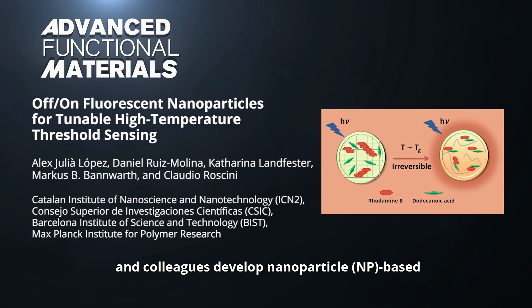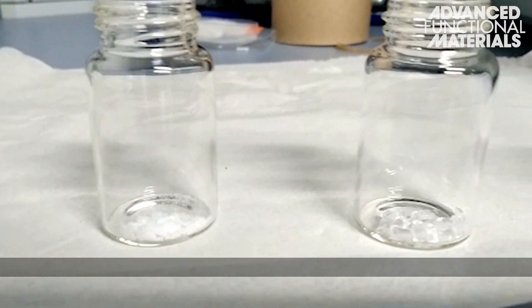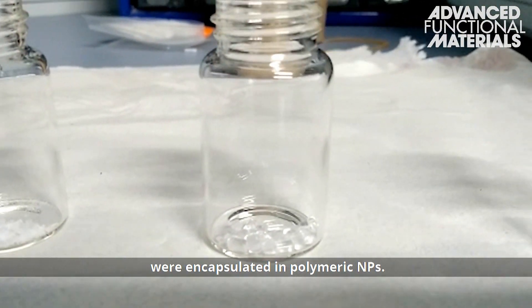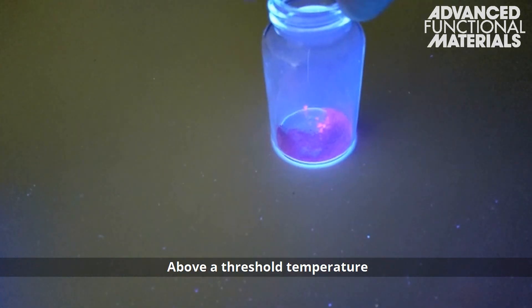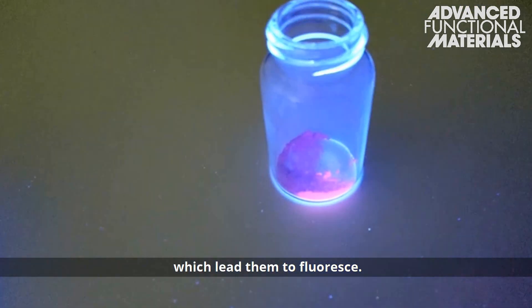develop nanoparticle-based fluorescent temperature sensors. Rhodamine B dye and dodecanoic acid were encapsulated in polymeric NPs. Above a threshold temperature, the NPs underwent a structural change, which led them to fluoresce.